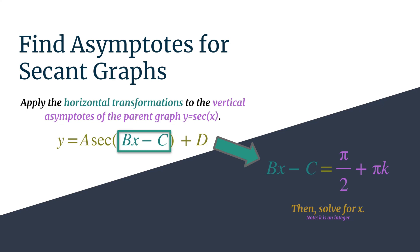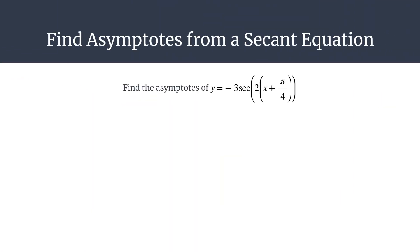So let's take a look at an example to see how this works. Okay, let's say we want to define the asymptotes of y equals negative 3 secant 2x plus π over 4.